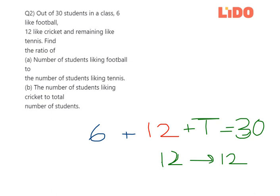The next part is: find the ratio of the number of students liking football to the number of students liking tennis. So the number of students liking football is 6, and tennis is 12, so 6 to 12 is the ratio.